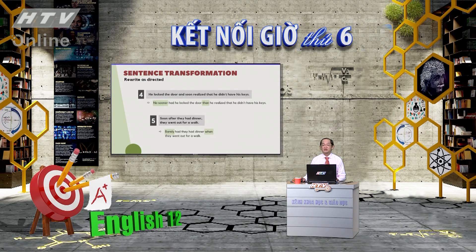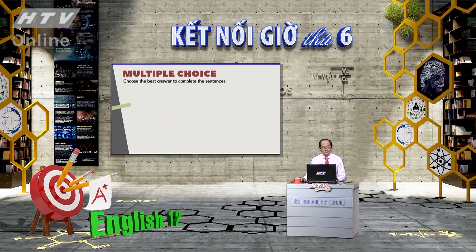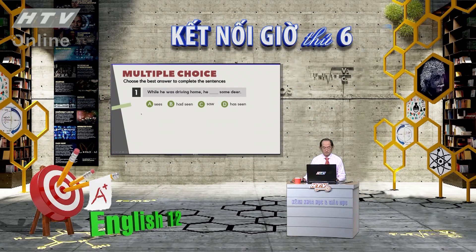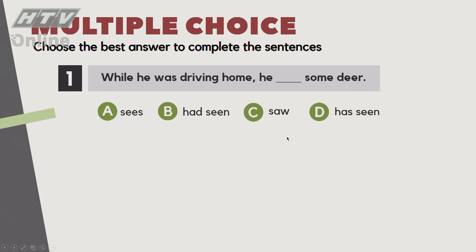Bây giờ chúng ta sang phần Multiple Choice Question - tổng ôn về Adverbial Clause of Time, không chỉ riêng inversion nữa. Câu số 1: 'While he was driving home, he ___ a deer.' Đáp án: A - sees, B - had seen, C - saw, D - has seen. Đáp án C là chính xác: 'saw.' Trên đường lái xe về thì bắt gặp con nai.